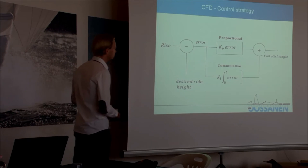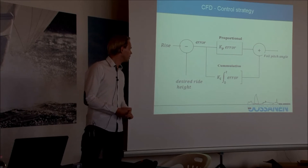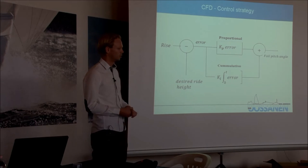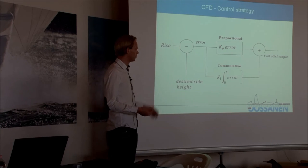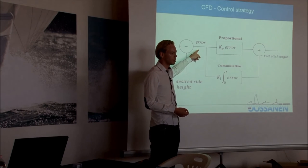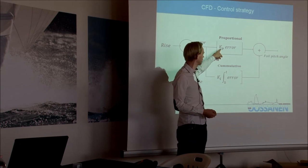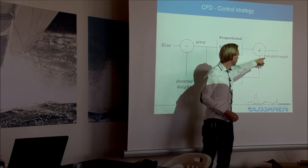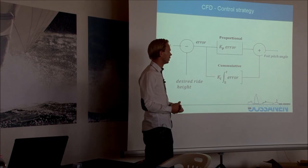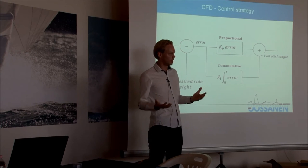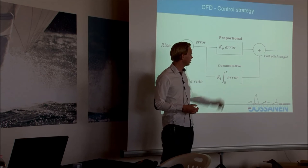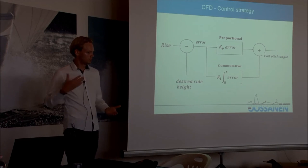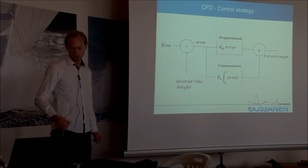The control strategy — this is a description of the control strategy used, for example, for a foiling Moth but also for the vessels considered in the CFD computation. Your ride height above the water is compared to the desired ride height. This gives an error, which is magnified to give you a foil pitch angle. Because this given foil pitch angle might not give your desired ride height, there is a cumulative error — the error from past time steps is added and also magnified to increase your foiling angle. That's basically what you do when you adjust the relation between your wand and the foil angle on a foiling Moth.